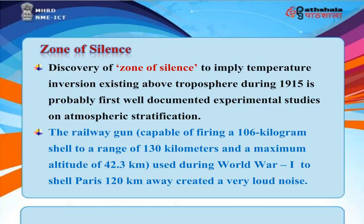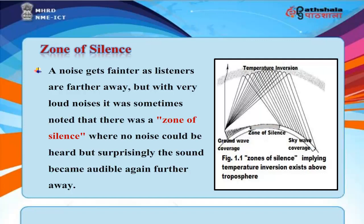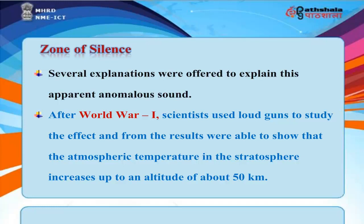Zone of Silence. Discovery of the zone of silence, implying temperature inversion existing above the troposphere during 1915, is probably the first well-documented experimental study on atmospheric stratification. A railway gun capable of firing a 106-kilogram shell to a range of 130 kilometers was used during WWI to shell Paris 120 kilometers away. A noise gets fainter as listeners are farther away, but with very loud noises, there was sometimes a zone of silence where no noise could be heard, but surprisingly the sound became audible again further away.